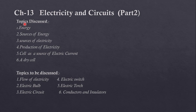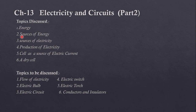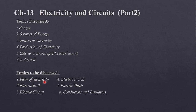Hello students, hope you all are fine. Today we are discussing lesson 13, Electricity and Circuits, part 2. The previous topics that we have discussed: energy, sources of energy, sources of electricity, production of electricity, cell as a source of electric current, and a dry cell. Now we will discuss the topics: flow of electricity, electric bulb, electric circuit, electric switch, electric torch, and conductors and insulators.